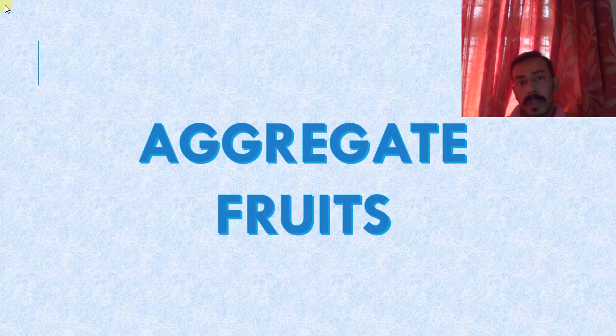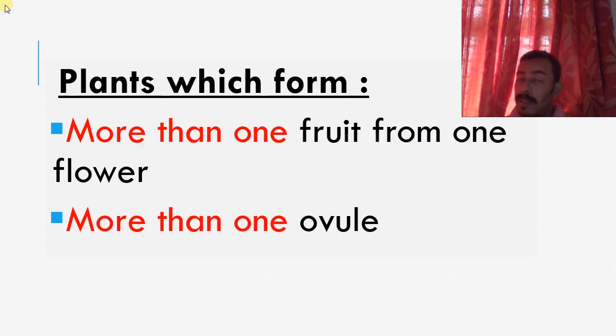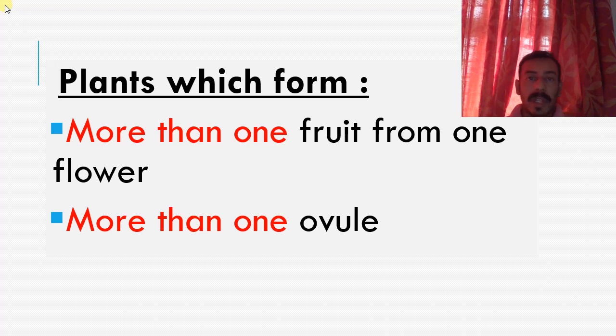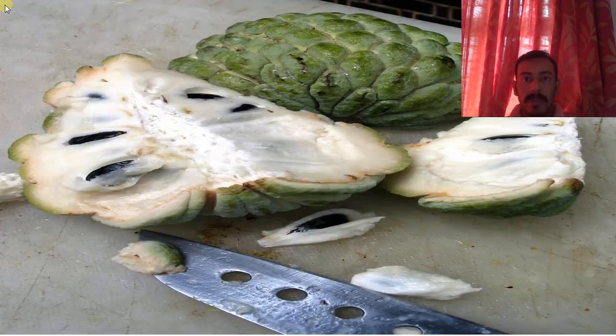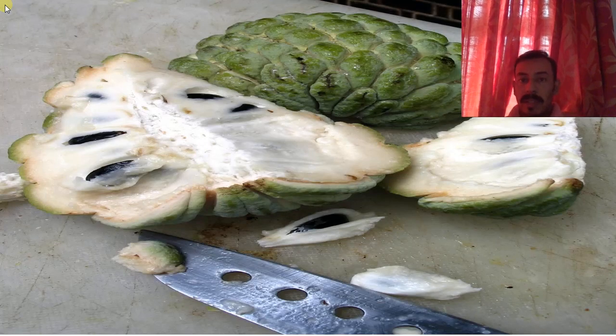Now let's talk about aggregate fruits. So there are also two points that you have to remember. These types of aggregate fruits are formed from plants which form more than one fruit from one flower. So you can see in simple fruit, it's only one flower and one fruit. Here, more than one fruit is formed. And it has more than one ovule. Obviously, it has more than one ovule. So this is an example.